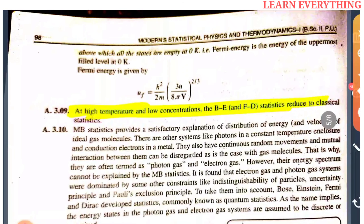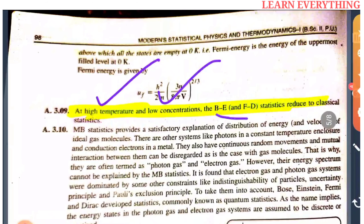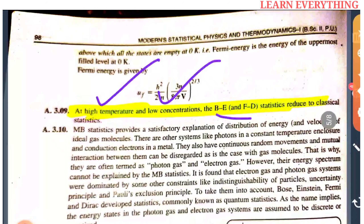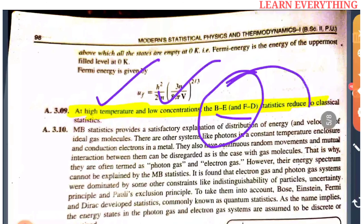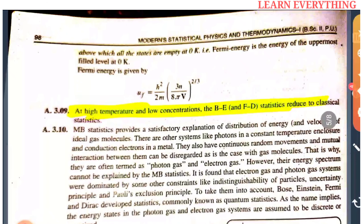At high temperature and low concentration, both BE and FD statistics reduce to classical statistics. So quantum statistics becomes a special case — when temperature is high and concentration is low, quantum statistics reduces to classical.